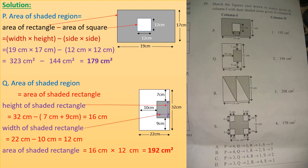In option Q, there is a rectangle of width 22 cm and height 32 cm. Inside is a small shaded rectangle whose height and width are not given directly, but the distances between the two rectangles are given. We calculate the height and width from these distances. The height of the shaded rectangle equals 32 cm minus the distances on each side.